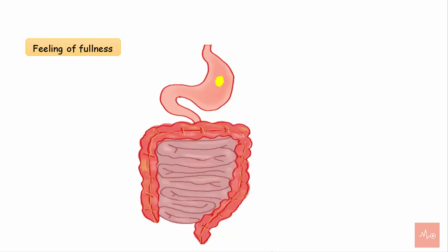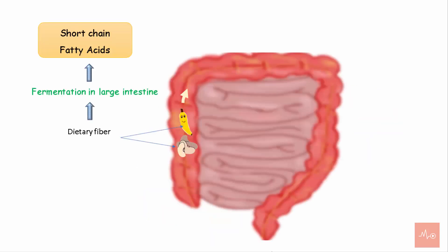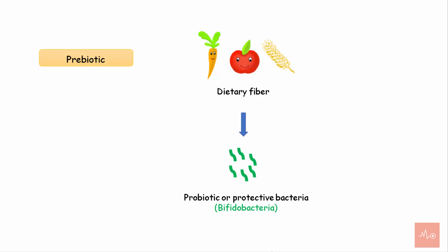Soluble fiber forms a gel by retaining water and swells up in the stomach, leading to a feeling of fullness. Fermentation of dietary fiber in the large intestine leads to production of short-chain fatty acids like butyrate and propionate, which inhibit the growth of pathogenic bacteria and enhance bioavailability of minerals in the intestine. Dietary fiber promotes growth of healthy bacteria in the gut and acts like prebiotics, onto which probiotics like bifidobacteria can feed and release short-chain fatty acids that have an anti-cancer and anti-inflammatory effect, providing health benefits to the host.